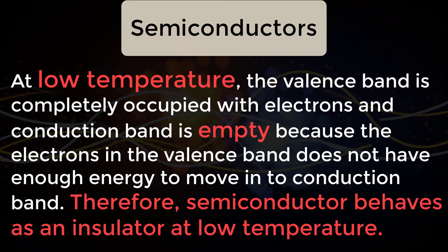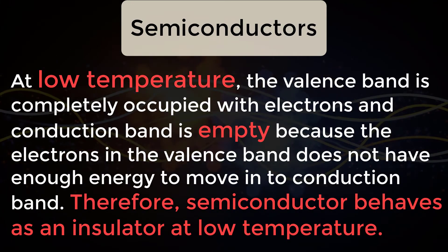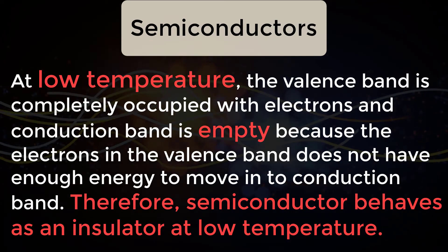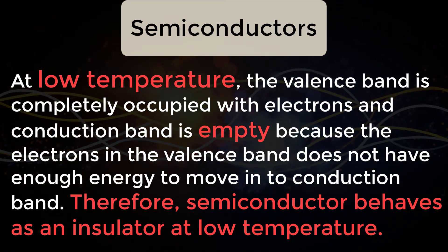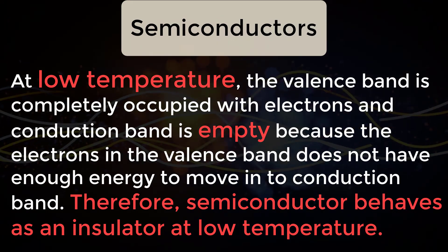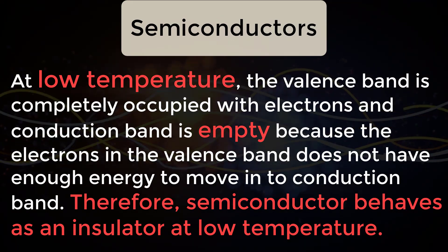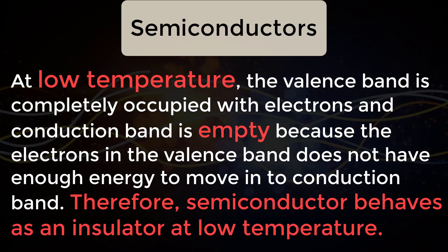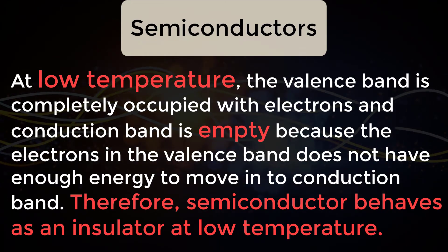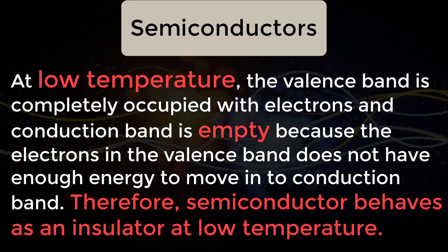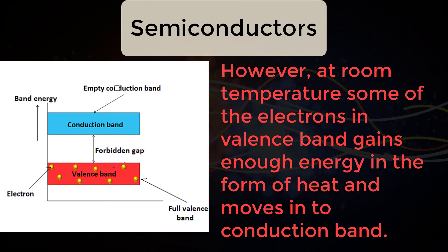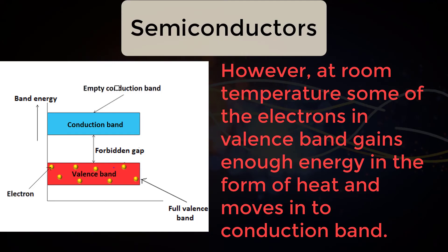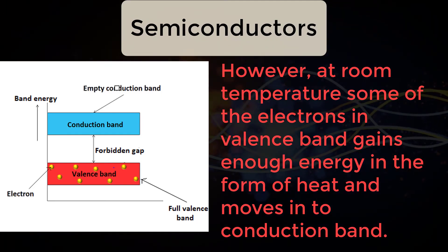At low temperature, the valence band is completely occupied with electrons and the conduction band is empty, because the electrons in the valence band do not have enough energy to move into the conduction band. Therefore, a semiconductor behaves as an insulator at low temperature. However, at room temperature, some of the electrons in the valence band gain enough energy in the form of heat and move into the conduction band.